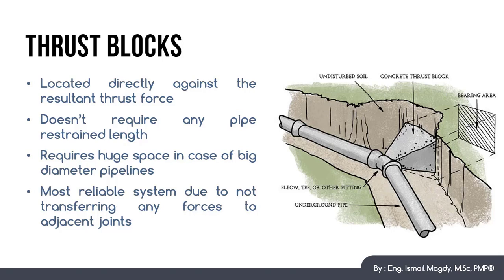However, the drawback of this option is that in case of pipelines with big diameters such as 800 millimeter or above and in case of high pressure pipelines, the size of thrust block could be really huge and it will not be possible to provide it because you may have many other adjacent underground utilities. So there would be no place to construct the thrust block exactly behind the fitting.